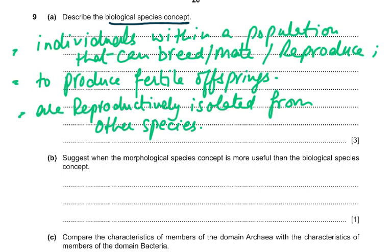The wording has to be: individuals within a population that can breed, mate, or reproduce. The second point is to produce fertile offspring. The third point is are reproductively isolated from other species. Look at the three marks and think of three points to give. The mark allocation is a very important indicator for how much to write.